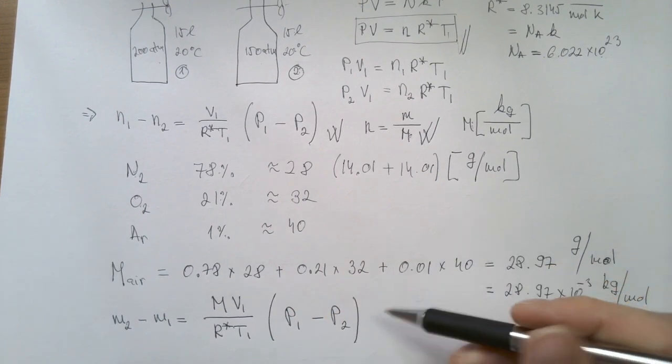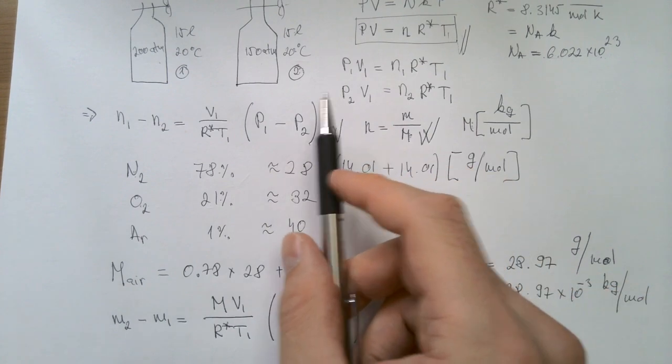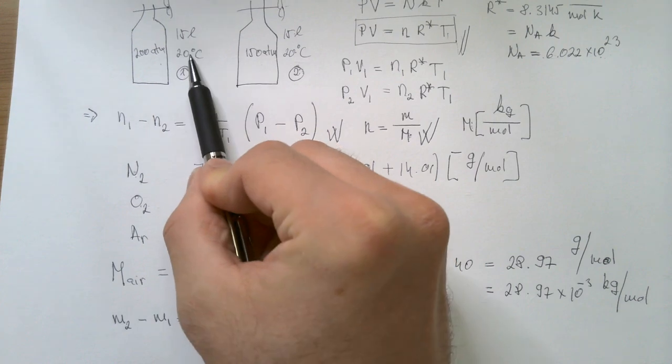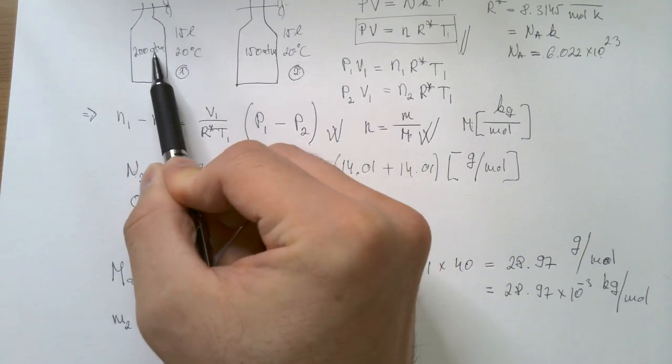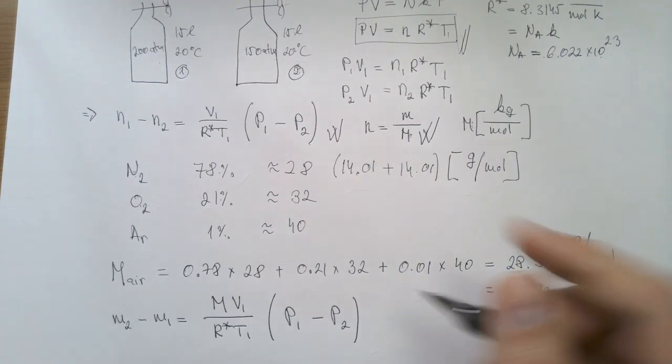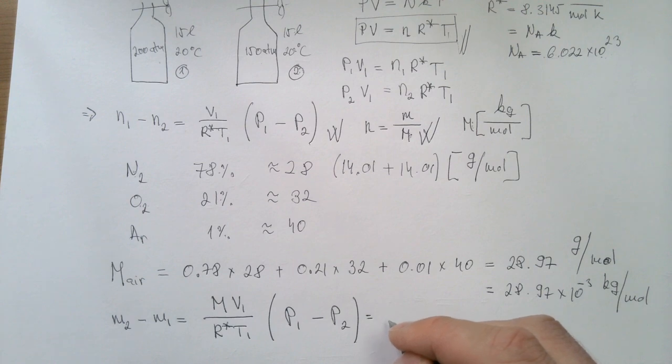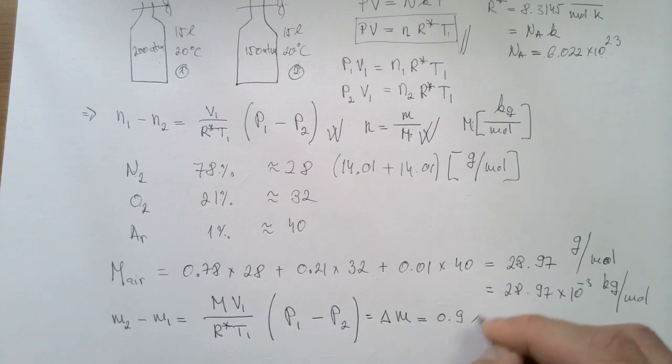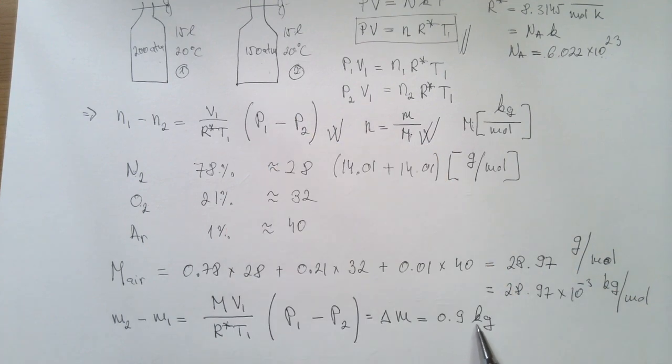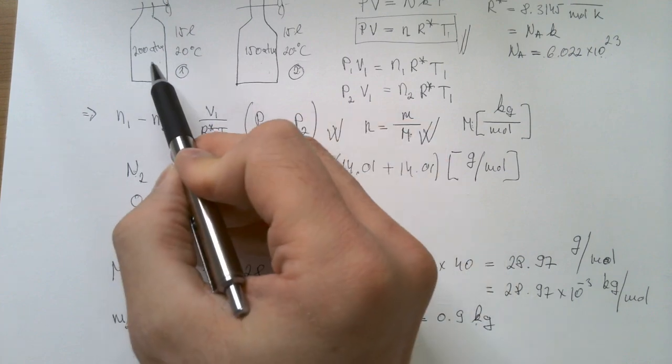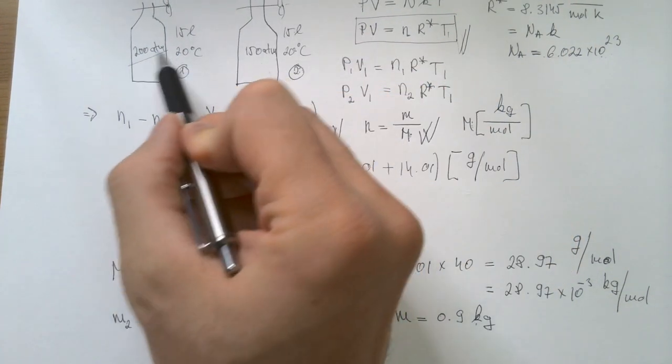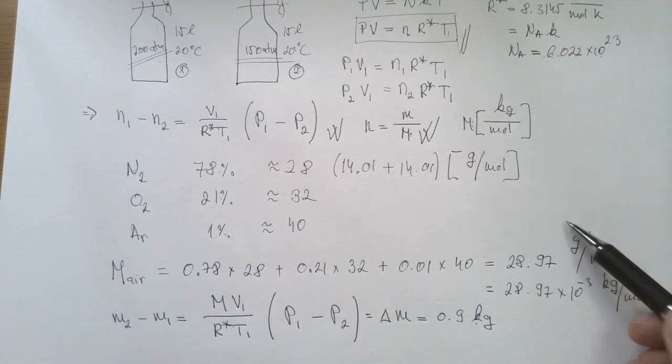In my two videos before this one, I converted these liters to cubic meters, Celsius to Kelvin, and I also converted pressures from atmospheres to Pascals. So if you plug in these numbers in proper SI units, you will get that this difference M2 minus M1, which could be delta M, is equal about 0.9 kilograms. So this tank gets almost one kilogram lighter when the air escapes from 200 atmospheres to 150 atmospheres.